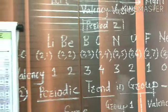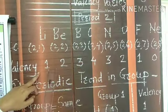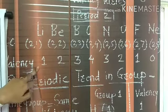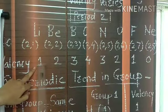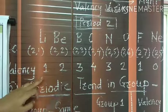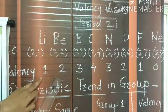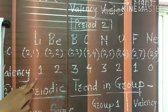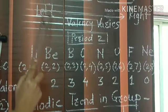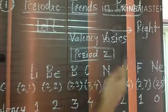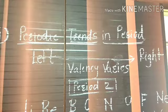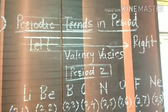Observing all the valencies of the elements in period number two, we see that there are variations in the valencies. So while going from left to right, the valency varies in the period.